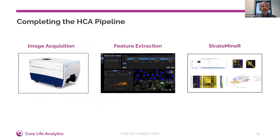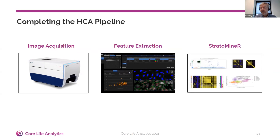What we really feel is that with Stratominer, we're helping many biologists to complete the HCA pipeline. The same person doing image acquisition and feature extraction with image analysis tools can then go on and mine the data and learn a lot more about their data sets without having to go to a data scientist. And if they have more complex questions, they understand a lot more about their data before they go to a data scientist. This also helps biologists build better high content assays that give better quality data.